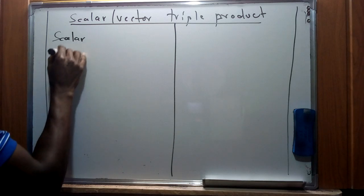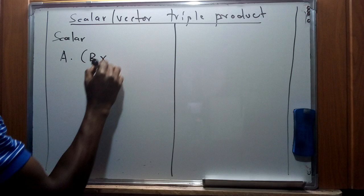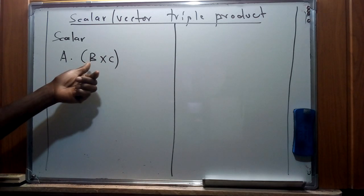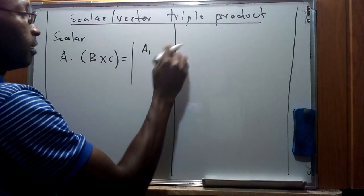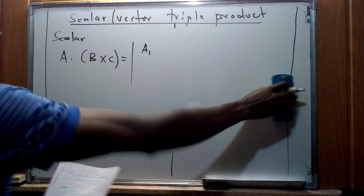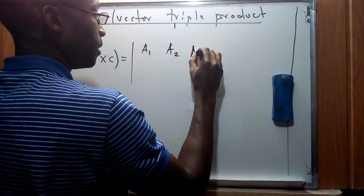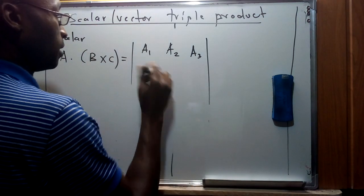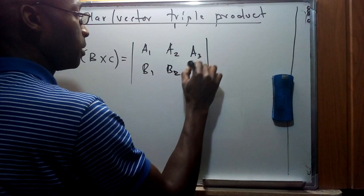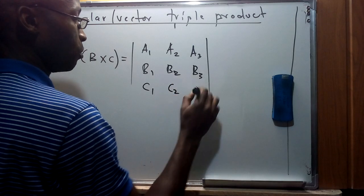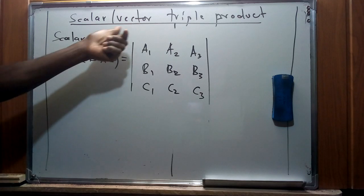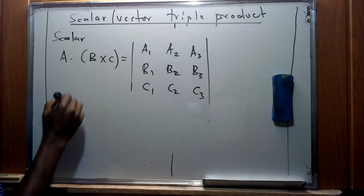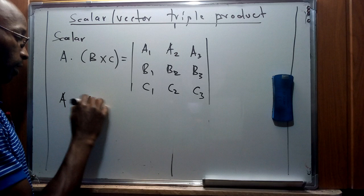This can be represented as the expression a · (b × c). For the components of vector a, we have a1, a2, a3 in three-dimensional space. Similarly for vector b we have b1, b2, b3, and for vector c we have c1, c2, c3. This is the expression generally used to represent the scalar triple product, and we'll look at the representation for the vector triple product shortly.